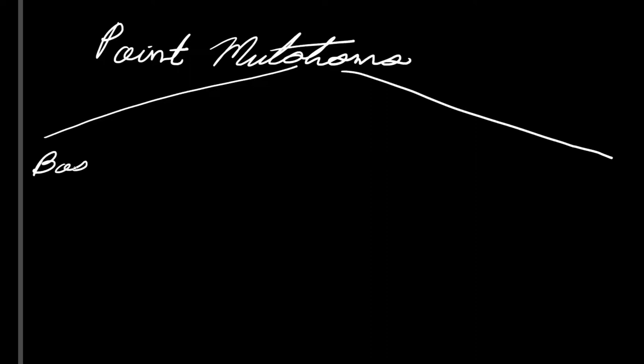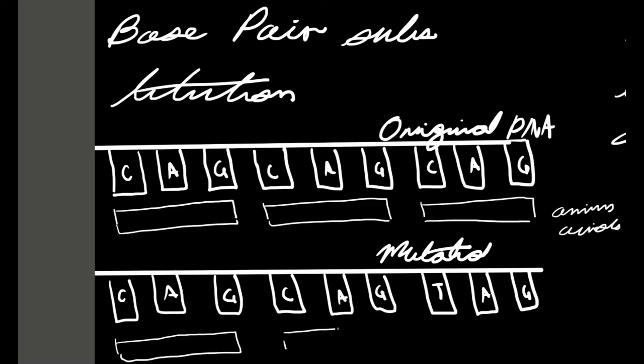Point mutations are chemical changes in just one base pair of a gene. The change of a single nucleotide in DNA template strand can lead to the production of an abnormal protein.